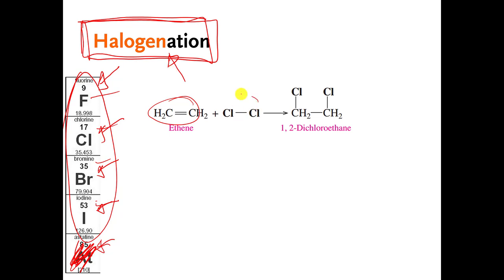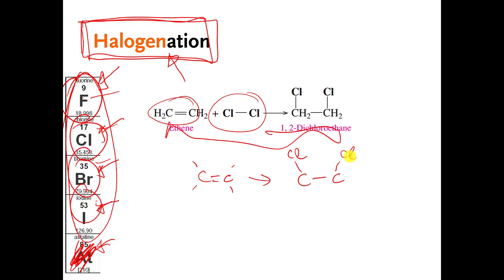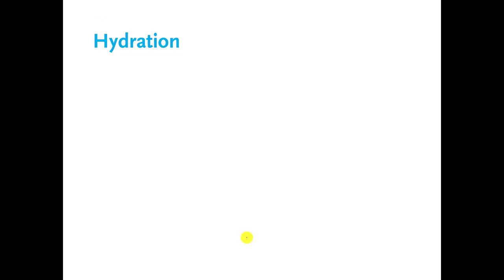And that is just another example of an addition reaction. I don't really care about the details here — the names and all that stuff. If you see a molecule with a carbon-carbon double bond, and it's converted into a carbon-carbon single bond, and one of these kinds of atoms ends up stuck to those carbons, then that's a halogenation reaction.